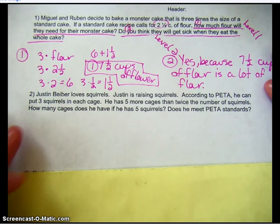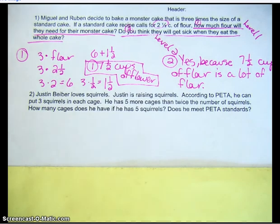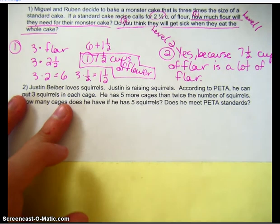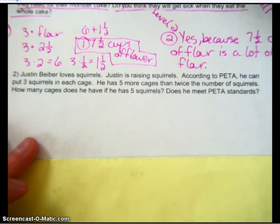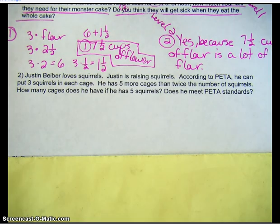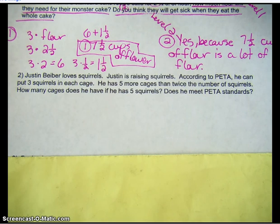Let's try one more together. My first step is always to read the problem: Justin Bieber loves squirrels. Justin is raising squirrels. According to PETA, he can put three squirrels in each cage. He has five more cages than twice the number of squirrels. How many cages does he have if he has five squirrels? Does he meet PETA standards?